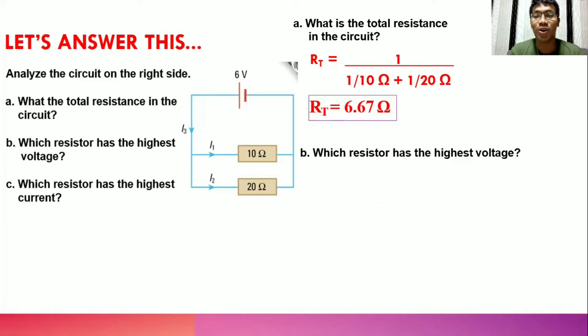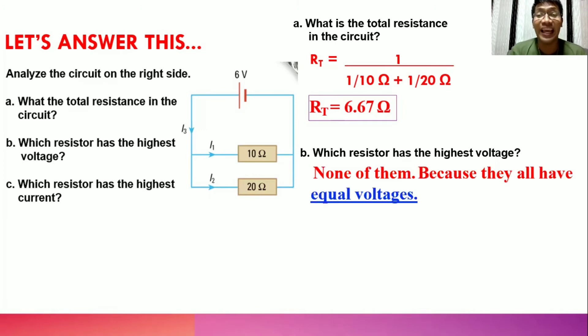Letter B: Which resistor has the highest voltage? Is it resistor one with 10 ohms, or resistor two with 20 ohms? The correct answer? None of them, because they all have equal voltages. If you can still remember the explanation a while ago, if the voltage running through this circuit is 6 volts, then both of them receiving 6 volts as well.